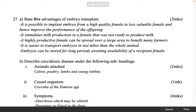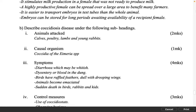State five advantages of embryo transplant. 5 marks. It is possible to implant an embryo from a high quality female to a less valuable female and hence improve the performance of the offspring. It stimulates milk production in a female that was not ready to produce milk. A highly productive female can be spread over a large area to benefit many farmers. It is easier to transport embryos in test tubes than the whole animal. Embryos can be stored for long periods awaiting availability of a recipient female.